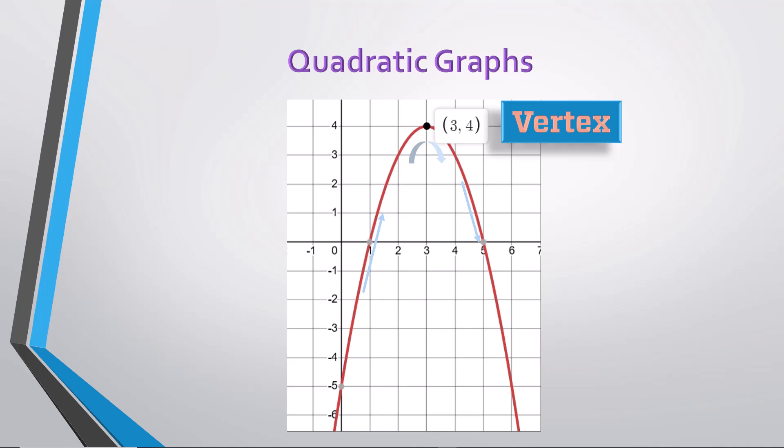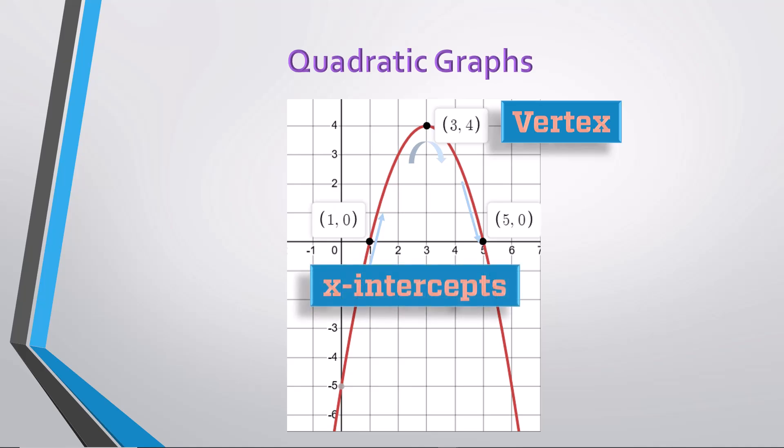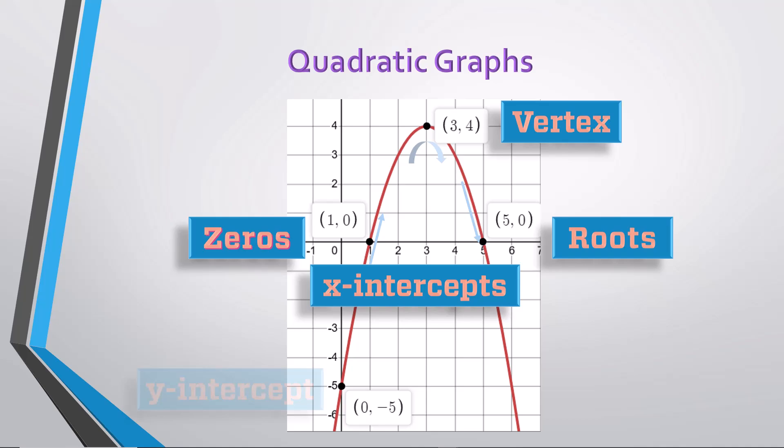This graph also crosses the x-axis in two places, the points 1, 0 and 5, 0, both called x-intercepts. These are also called zeros, or roots. There is also a point where the graph crosses the y-axis, this one at 0, negative 5, called the y-intercept.